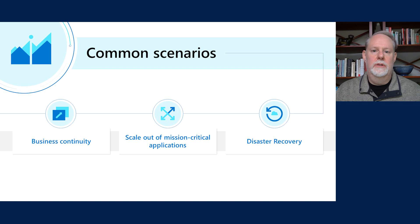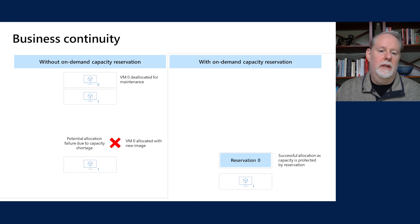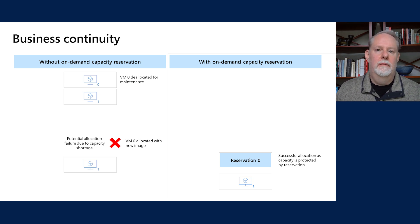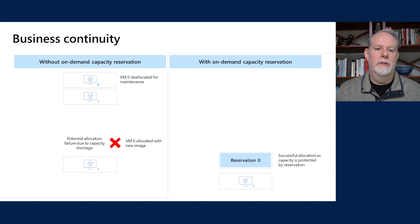The first common scenario is basic business continuity. Without on-demand capacity reservation, sometimes you need to do maintenance on your virtual machine — you deallocate it to replace it with a new updated image, perhaps on patch Tuesday. Occasionally, another customer may take the capacity you had while your VM was deallocated, especially during surges in Azure usage. With on-demand capacity reservation, the reservation remains in place even while your virtual machine is deallocated, so when you come back and reallocate, you can have full confidence that you will receive a successful allocation.